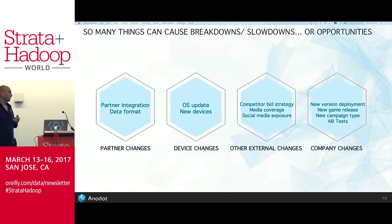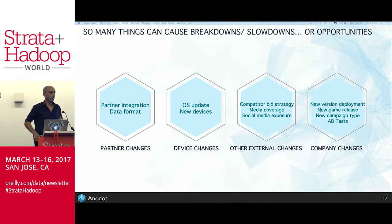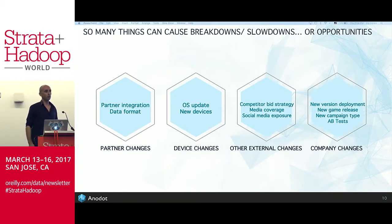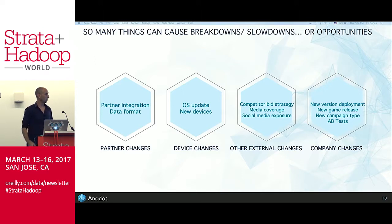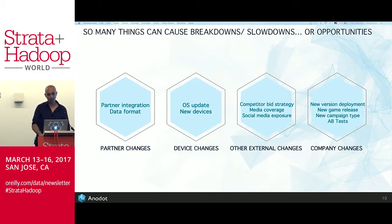There are a lot of things that can break down or opportunities that can happen that you'll miss if you don't track your data. A partner could change their integration API or data format, breaking things you thought were working. A device OS update or new device types can cause issues. External changes like competitors bidding on ads, media coverage, or social media exposure — positive or negative — can all impact your app. Company changes like new versions, game releases, A/B tests can all cause breakdowns or opportunities.